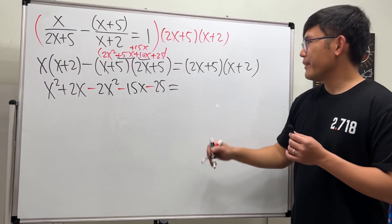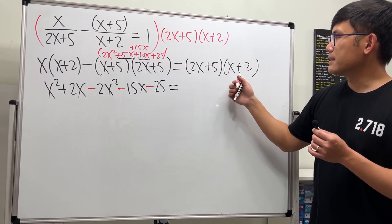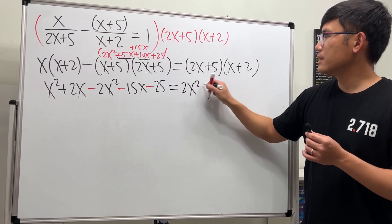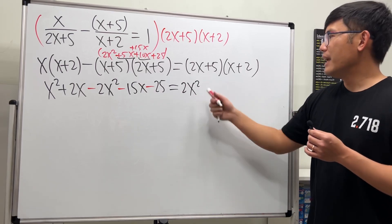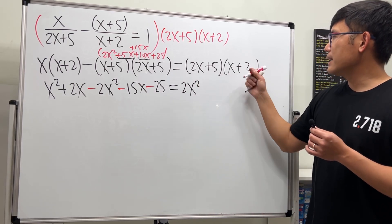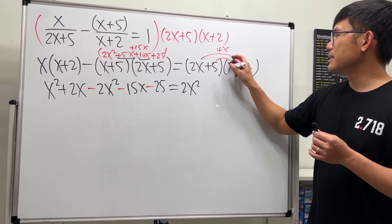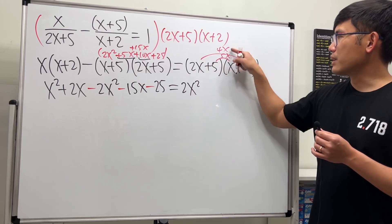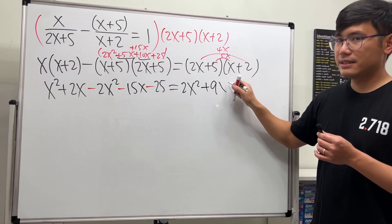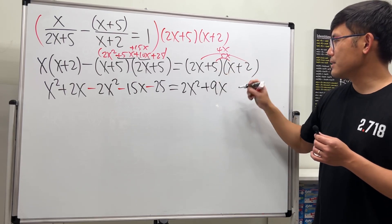And one more right here: equals—okay, 2x times x is 2x squared, just put that result down right here. And then 2x times that is 4x, and this times that is 5x, so together we have plus 9x. Lastly, 5 times 2 is plus 10.